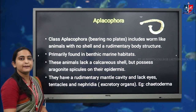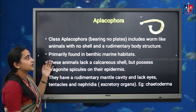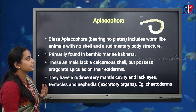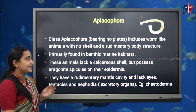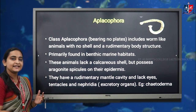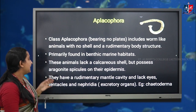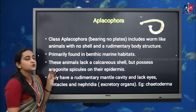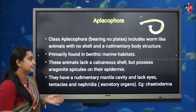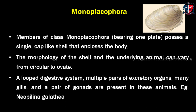The first class is Aplacophora. As the name suggests, Aplacophora means they do not bear a shell or plate on their body. They include worm-like animals with no shell but have a rudimentary body structure. They are mostly found in benthic marine habitats — on sea bottoms. These animals lack a calcareous shell, but possess calcium spikes on their epidermis. They have a rudimentary mantle cavity and lack eyes, tentacles, and nephridia. An example is Chaetoderma.